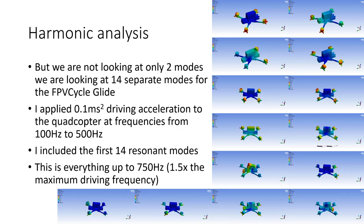And the reason that we're not looking below 100 hertz is that from the black box logs, there's really no resonant activity in the glide frame below 100 hertz, so there's no need to look down there.